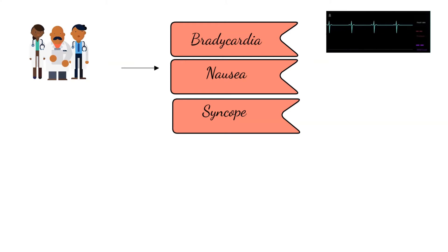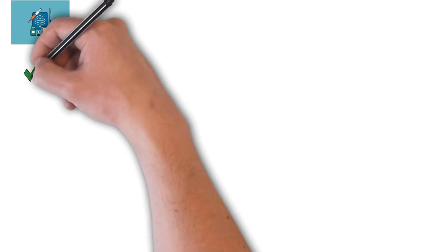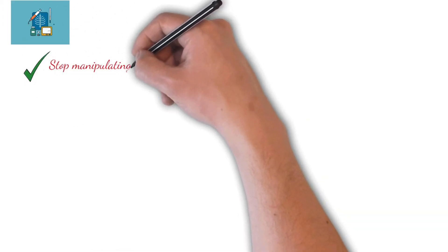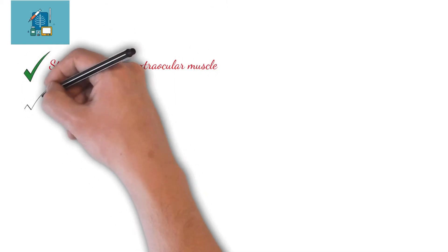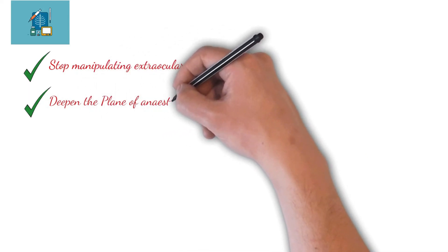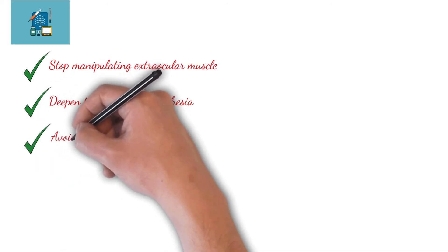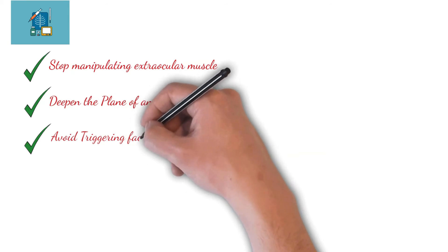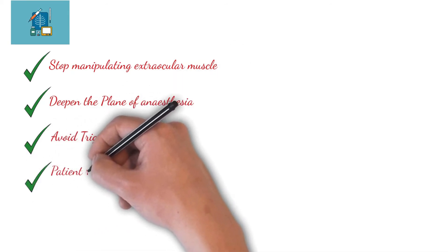Now, how will you manage the oculocardiac reflex in a patient undergoing eye surgery? First and foremost, tell the surgeon to stop manipulating the extraocular muscle. Most of the time, by doing this, the oculocardiac reflex subsides. We can also deepen the plane of anesthesia, and we should avoid all triggering factors.